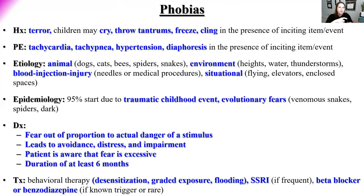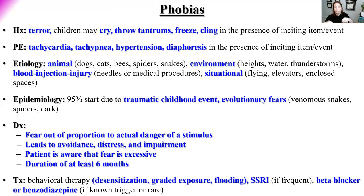Treatment for phobias: behavioral therapy is key — desensitization using graded exposure (smaller to larger amounts) or flooding (immediate full exposure). SSRIs if the phobia is frequent, such as someone who must travel by plane for work. A beta blocker or benzodiazepine is appropriate for rare exposures, like test-taking anxiety. Behavioral therapy remains central to treatment.